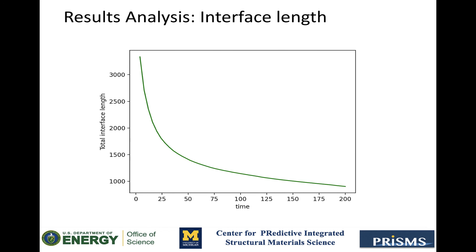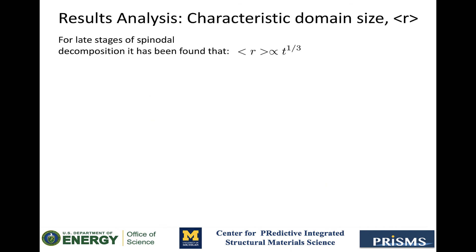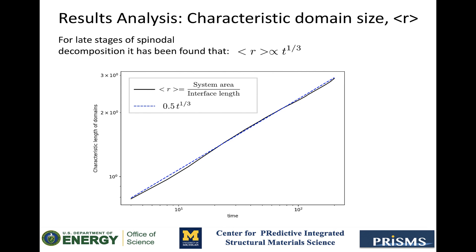One last thing I want to show is a nice result we can obtain from this interface length measurement. A known feature of coarsening following spinodal decomposition is that the characteristic length of the system increases with time, following this power law. And one way to calculate the characteristic domain size in a 2D system is taking the size of the system, which is a constant, and then divide it by the total interface length, which is what we just calculated. And if we just plot this versus time, we get the black solid line. By the way, the length scale of the axis is logarithmic. And then we can compare it to the form that includes the t to the one third power times a constant that I just found by fitting. That is the blue dashed line.